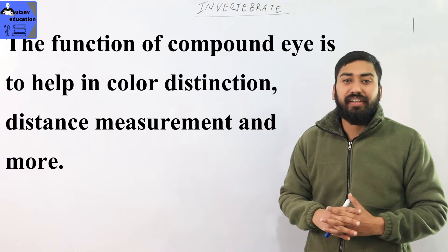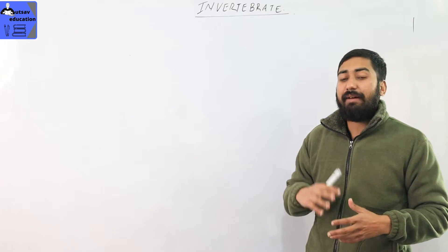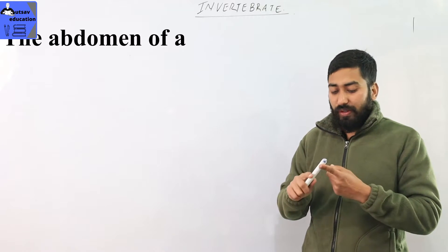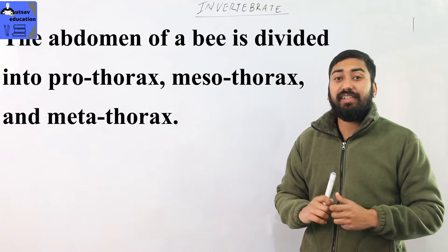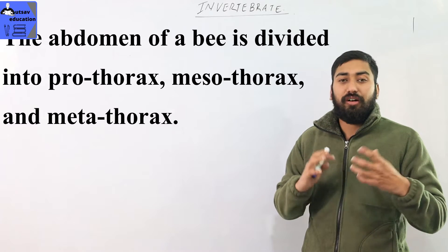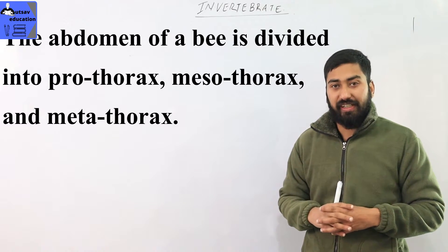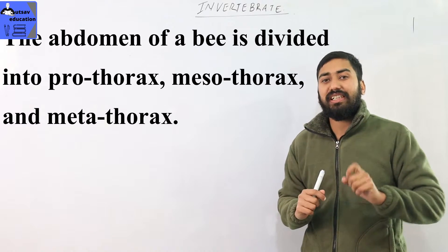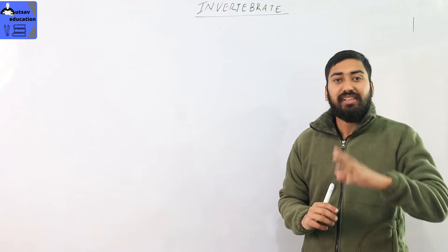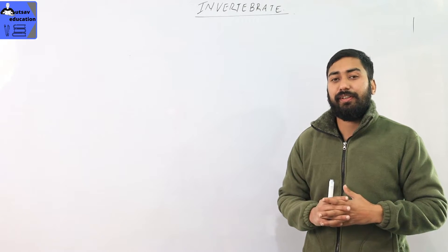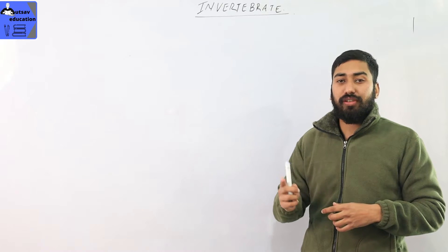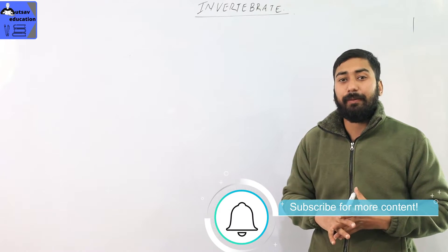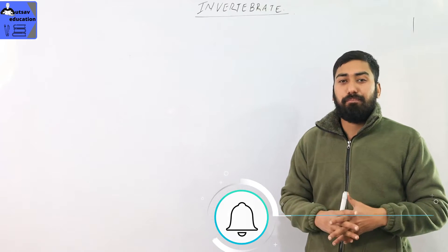The abdomen of honeybee is divided into 3 parts: prothorax, mesothorax, and metathorax. These are the three different parts of the thorax.